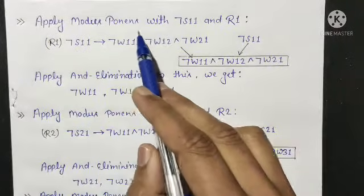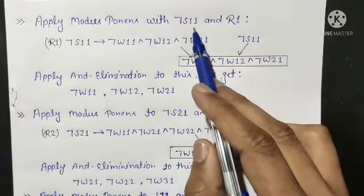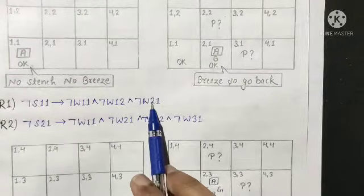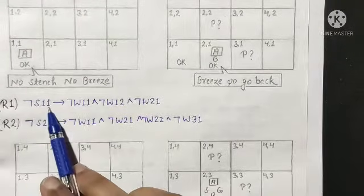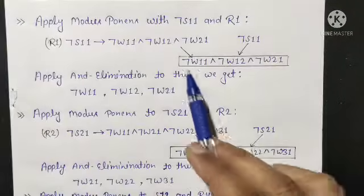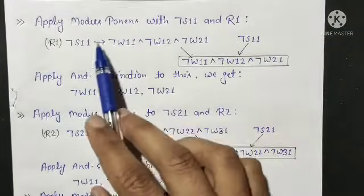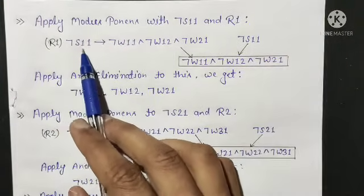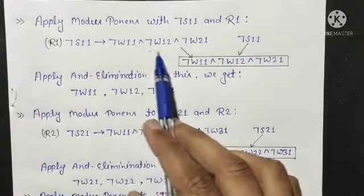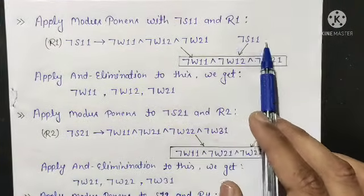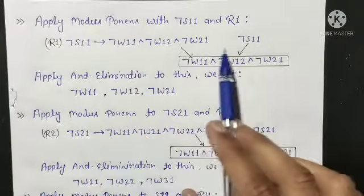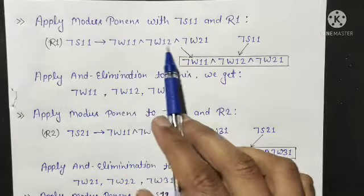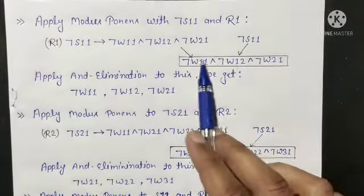Now we are applying Modus Ponens with the negation of S11 and rule R1. Our R1 is this rule, and negation of S11 means there is no stench in room 1,1. So we are applying Modus Ponens with R1 and negation of S11. Let us consider this is the P statement, this is the Q statement — according to Modus Ponens, if P is true and P implies Q is true, then Q has to be true.